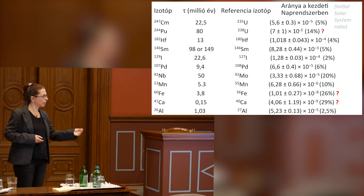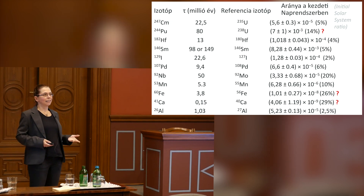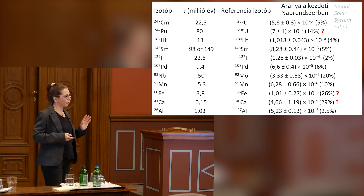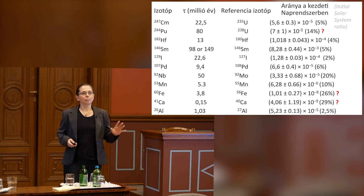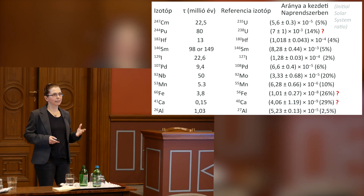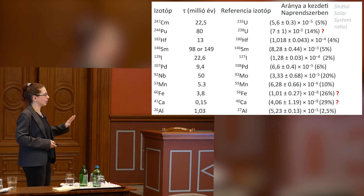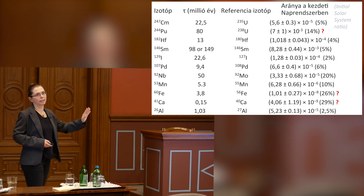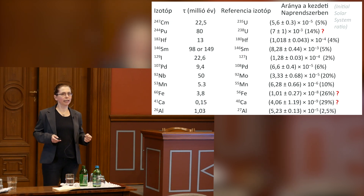In the last column is the ratio as measured in the laboratory in the early solar system. Some of these nuclei are known at the five percent level, while others — marked with three question marks — have systematic measurement problems and are still under debate. But in general we have some amazing data. Half of my problem is solved — not by me, but by people who work in the lab on meteorites making these high-precision measurements.